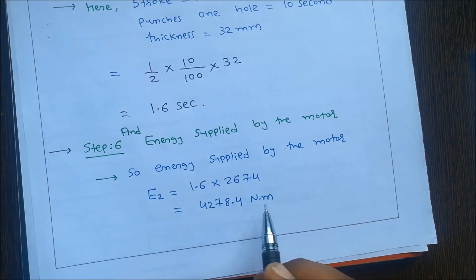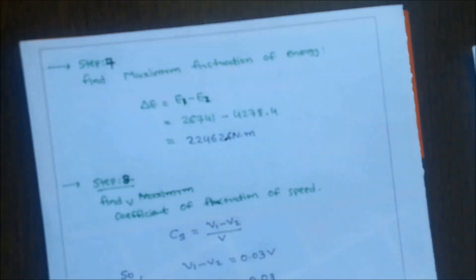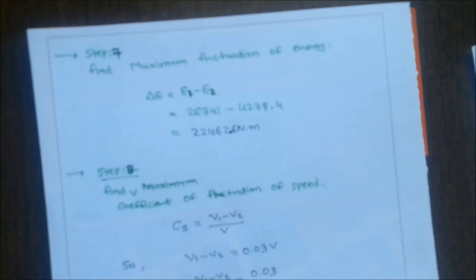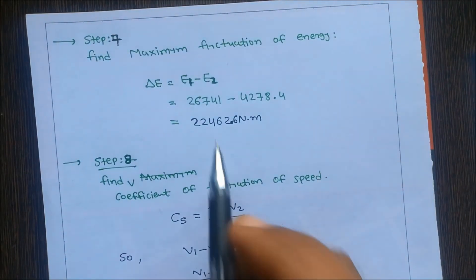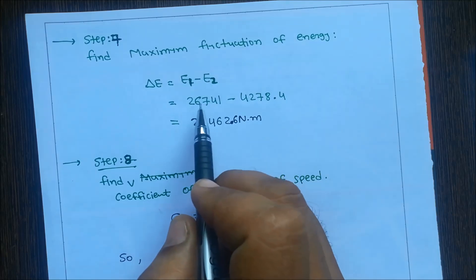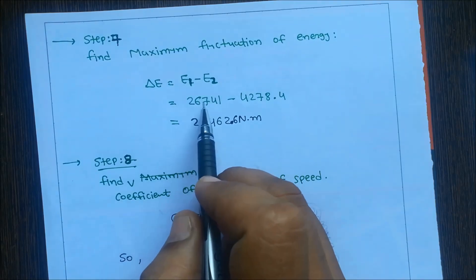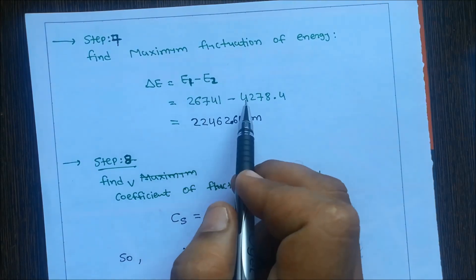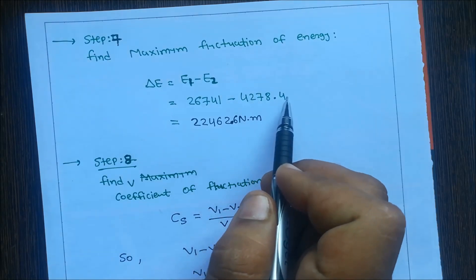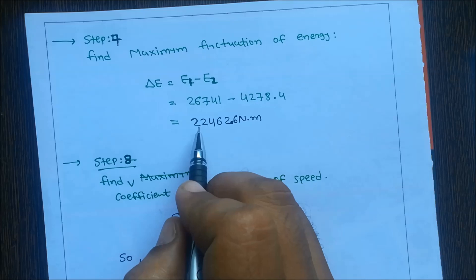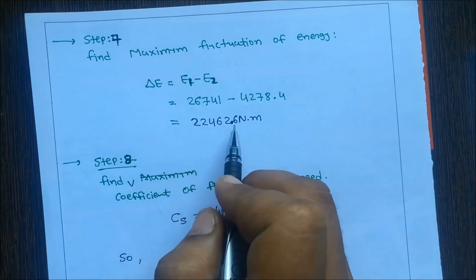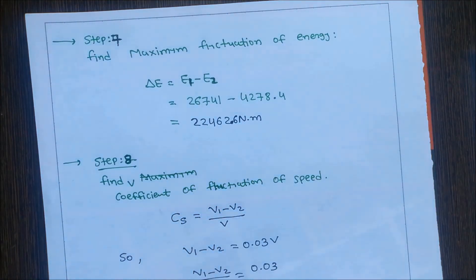Step 7: Find maximum fluctuation of energy. ΔE = e1 − e2 = 26741 − 4278.4 = 22462.6 N·m.